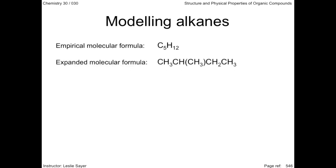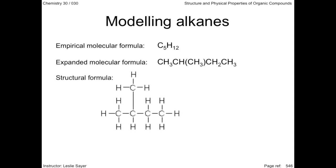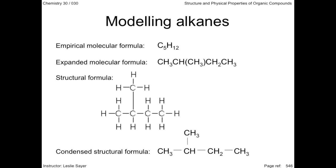The expanded molecular formula gives us more information about the structure. It shows the groupings of atoms in any chains coming off of the row of carbons by way of brackets. In this case, a CH₃ side group is shown attached to the second carbon. Although detailed and communicating clearly where any branched chains are, the structural formula is cumbersome and time-consuming to draw. The condensed structural formula shows the bonds between the carbons and not between the carbons and hydrogens, because single bonds between carbon and hydrogen atoms are assumed to be there in the condensed structural formula.